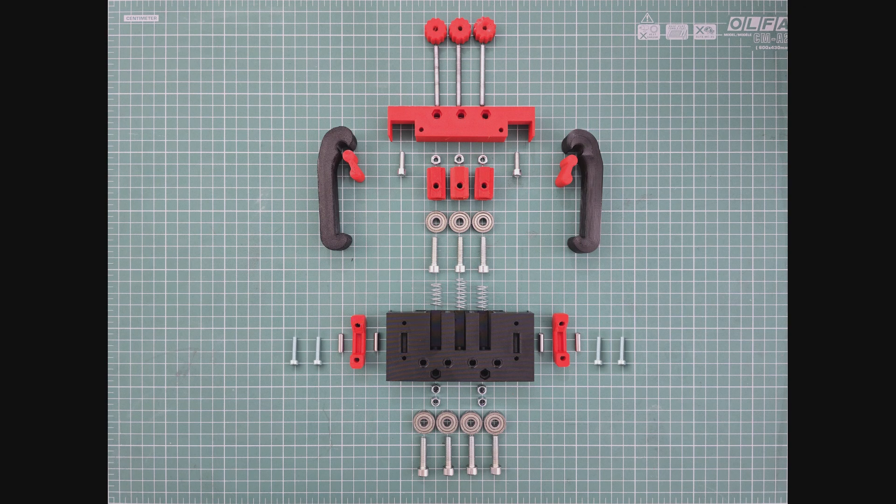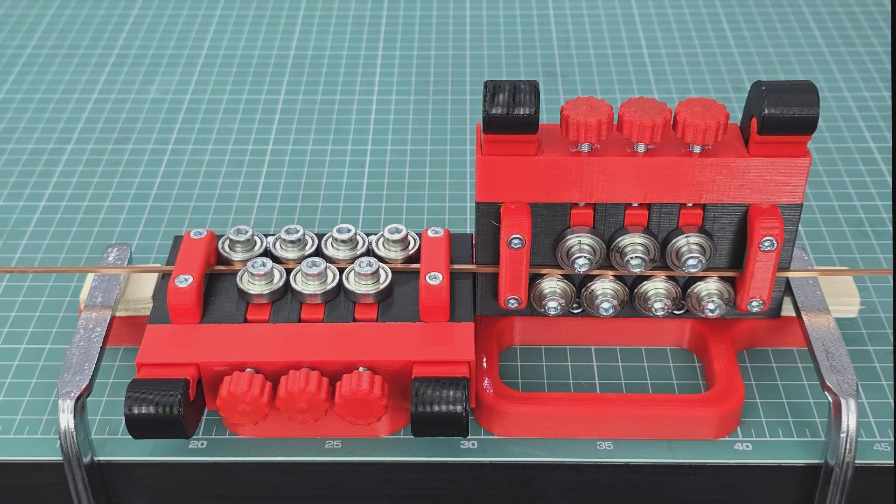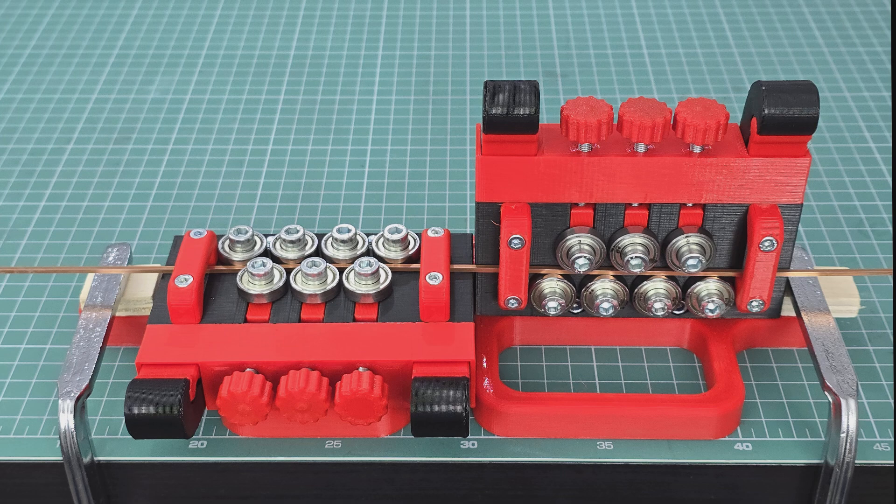Dealing with bent or uneven rectangular section wire can be a real challenge. So today I'm introducing the Tandem Wire Straightener, a new benchtop tool designed to straighten and smooth out rectangular wire perfectly.